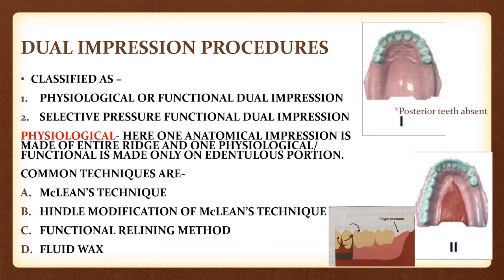This technique is used in distal extension cases, that is Kennedy class 1 and class 2, where there are no teeth posterior to the edentulous space. In class 1 and class 2, the denture takes support from both the teeth and the tissue, unlike class 3 in which support is taken only from the teeth.